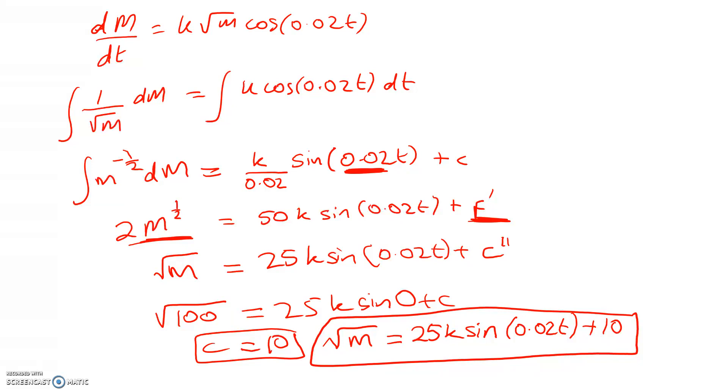Okay, so the next thing we have to do is to figure out what the value of k is. So we're told for that, that when t is 50, M is equal to 196. So you might hope that this worked out to have a really nice exact solution, but it doesn't. We get root M is equal to 25k sin t. So we're just substituting in. This is the easy part now. Plus 10.